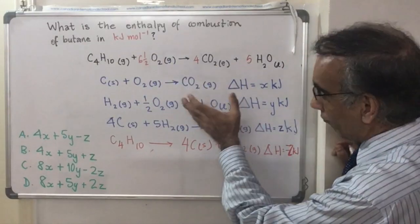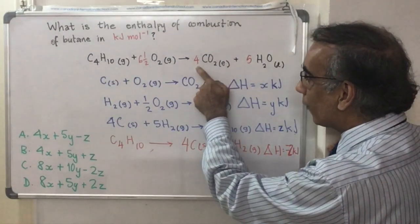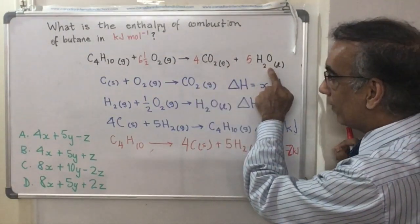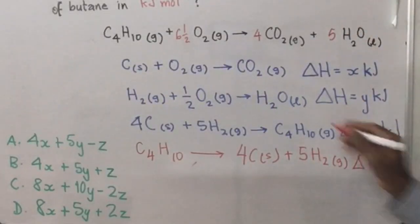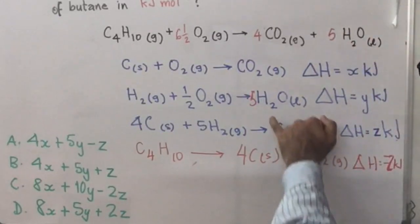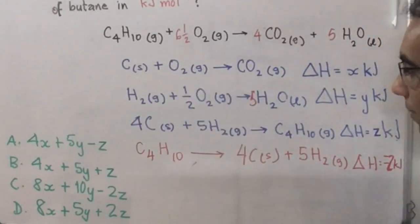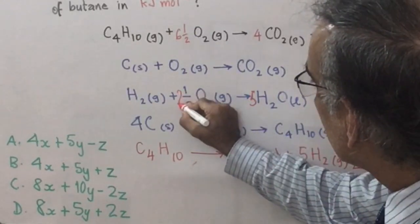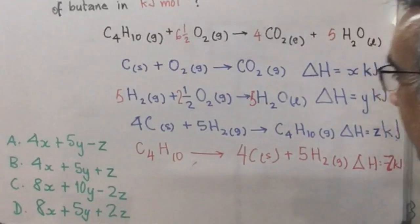So, before we do that, we can also look at we need to get four CO2 and five H2O. So, let's choose the H2O. And if we put a five here, then we'll have to put a five here. So, five multiplied by a half is going to make this two and a half and then it's going to make that five.